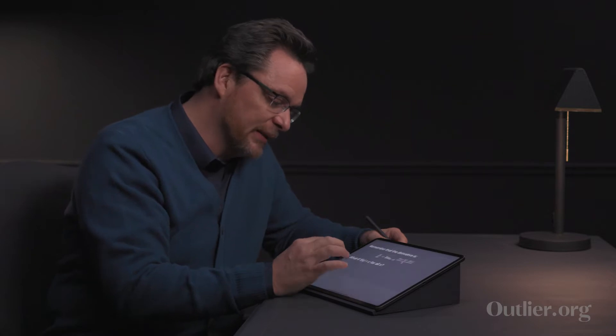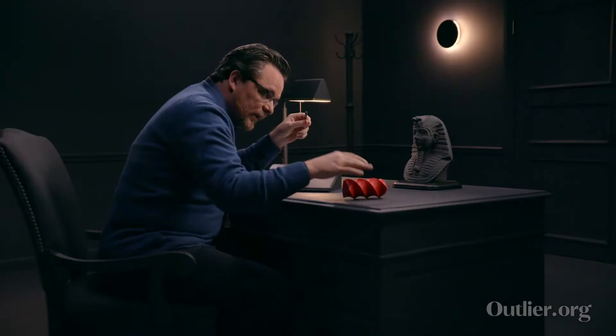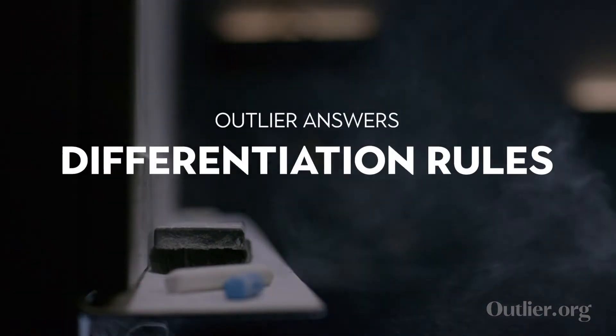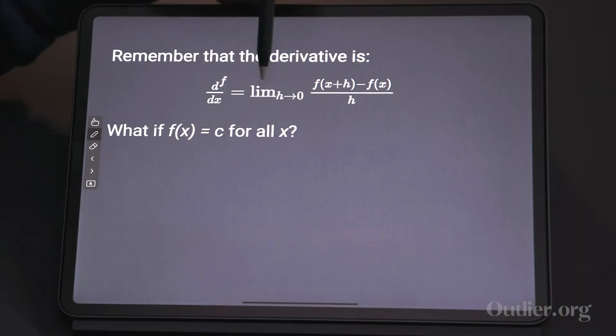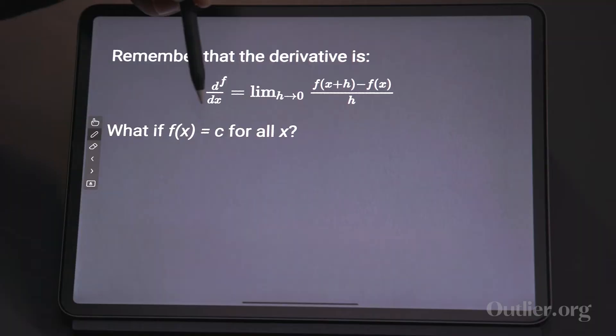This is the section where we have to learn the law. Let's get there and see our first property that lets us take these derivatives much quicker. The first one we're going to look at is that, recall that the definition of the derivative is the limit as h goes to zero of f of x plus h minus f of x over h. We're going to do one more via this definition. And so we have f of x equals c, so we're having a constant function.